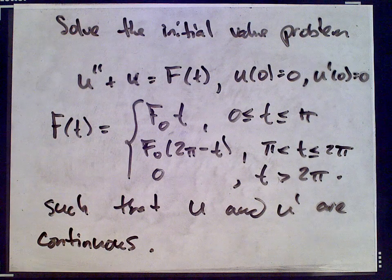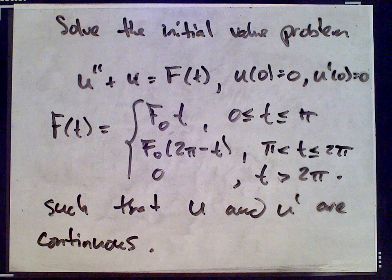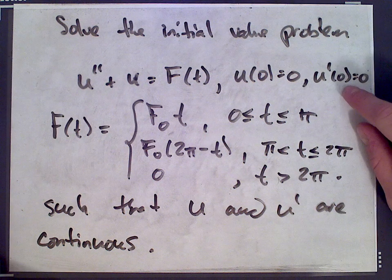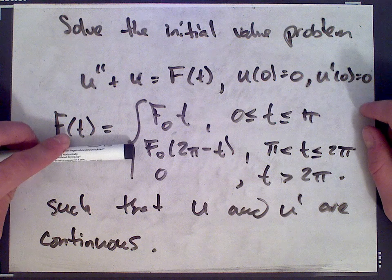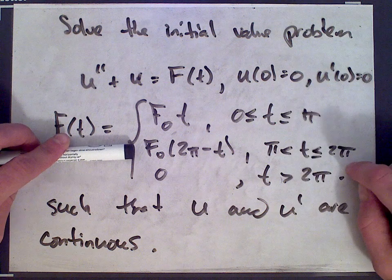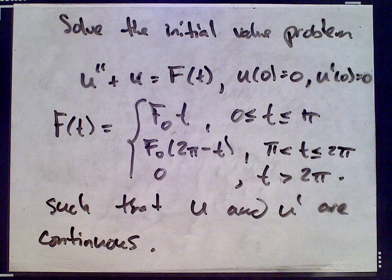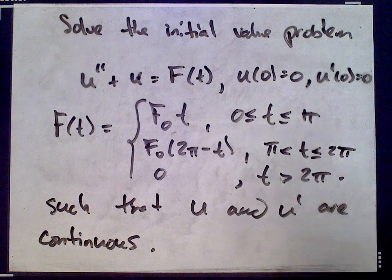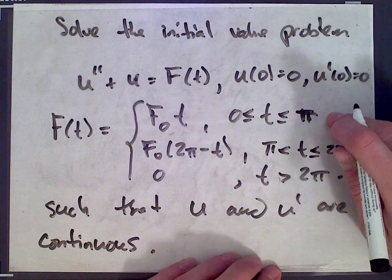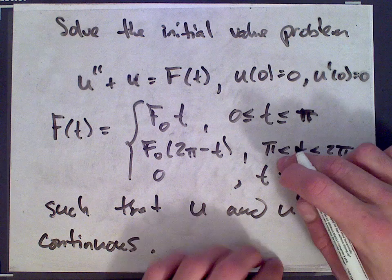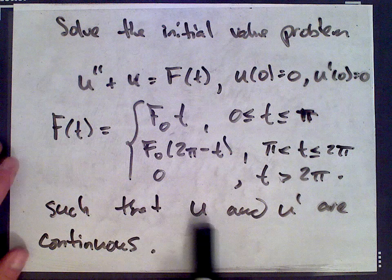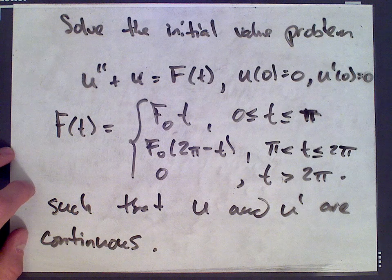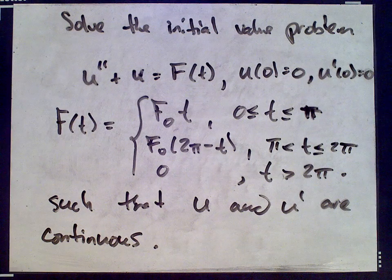We're going to solve each, and those are going to give us some constants. For the first set of constants, from 0 to π, we can solve for those using the initial data given. But next we'll have another solution involving new constants on π to 2π. To solve for those constants, we don't have any initial data, but we know from the solution on the interval 0 to π what the value of the solution should be at π — the beginning of the interval π to 2π. We know this because we want u and u prime to be continuous. This requirement that u and u prime are continuous is going to allow us to solve for the constants that come up in the solution.